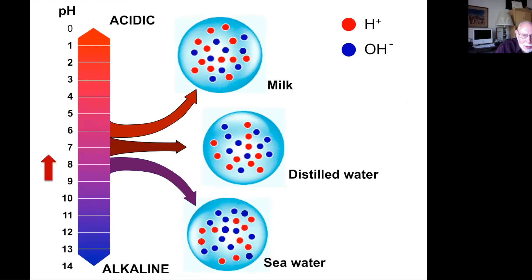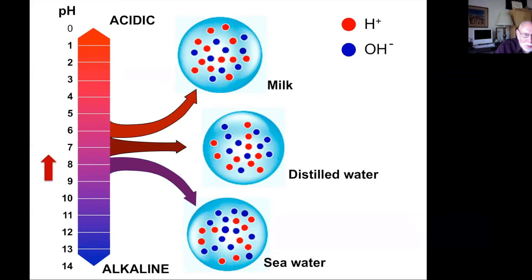Milk, with lactic acid slightly more hydrogen ions than hydroxide, has a pH around 6. Seawater, just slightly more hydroxide ions than hydrogen, has a pH around 8.2 — a little bit alkaline, about to the same degree that milk is acidic. What we're really talking about with ocean acidification is a change in the pH of seawater from about 8.2 down to about 8.05 to 7.75 — a range we're not sure where it will end up, but it's still not acidic, just less alkaline than before.